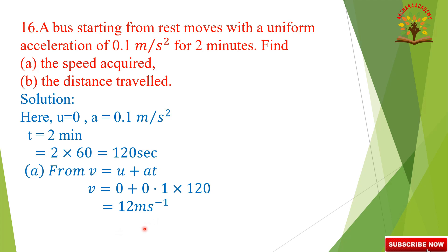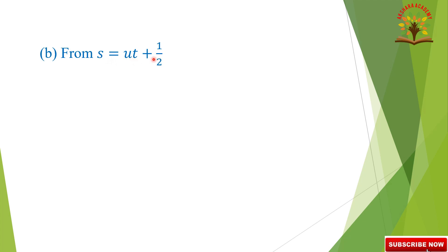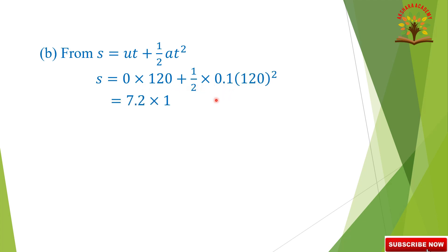The speed acquired is V equals 12 meters per second. Next, distance travelled using S equals UT plus half AT square. Substituting values: S equals 0 into 120 plus 1/2 into 0.1 into 120 squared, giving 7.2 into 100, so the distance travelled S equals 720 meters.